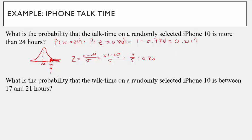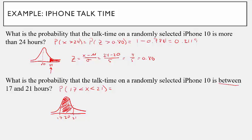Let's do this last one. What is the probability that the talk time on a randomly selected iPhone X is between 17 and 21 hours? So I want to find the probability that random variable X is between 17 and 21. I draw the density curve — it's centered at 20, and I want to be between 17 and 21. The graph isn't perfectly to scale, but you use it to get a good idea of what the shaded region looks like.